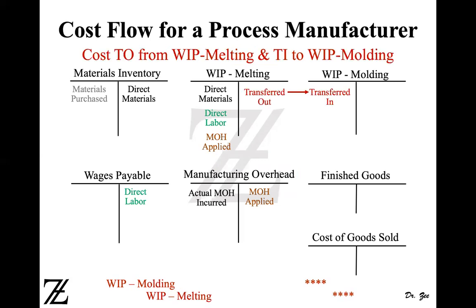Now moving to the next slide, which discusses costs transferred out from work in process melting and costs transferred into work in process molding. TO is transferred out and TI is transferred in. This is the same as transferring cost of goods manufactured. What you have completed in the melting department moves to another department — molding. So we debit work in process molding and credit work in process melting.